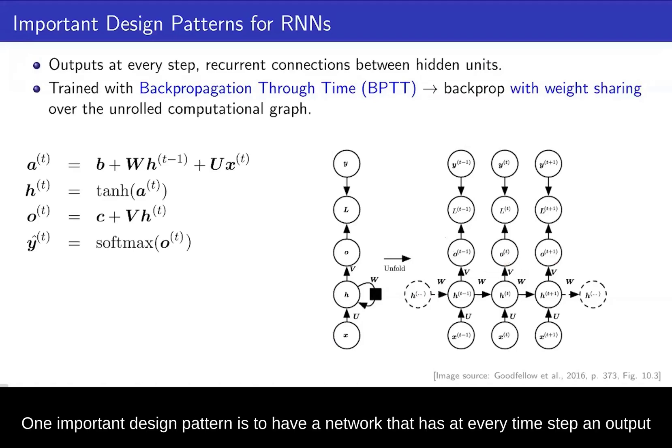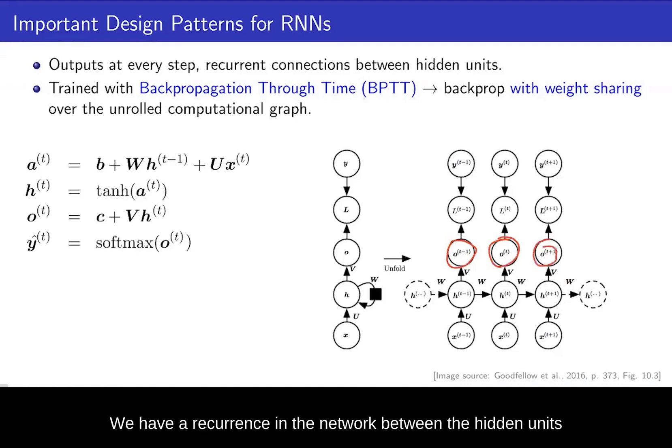One important design pattern is to have a network that has at every time step an output. We have an output O here at each time step, and we have a recurrence in the network between the hidden units. So we go from one hidden unit H to the next. And you can see the update equations here on the left.